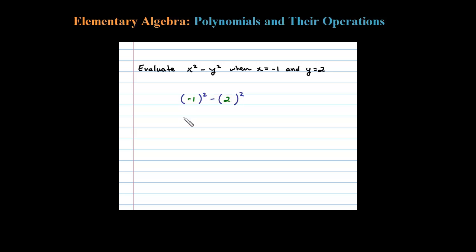Using parentheses makes the order of operations a little clearer. We have negative 1 squared — negative 1 times negative 1 is positive 1 — minus 2 squared, which is 4. So 1 minus 4 is negative 3.